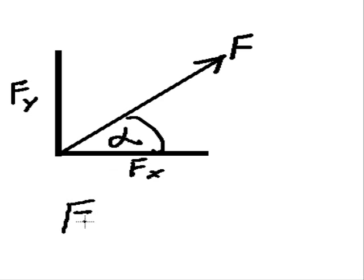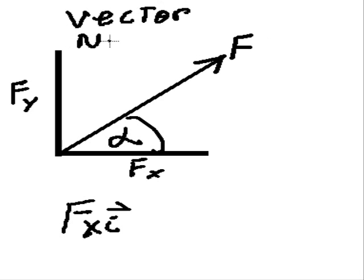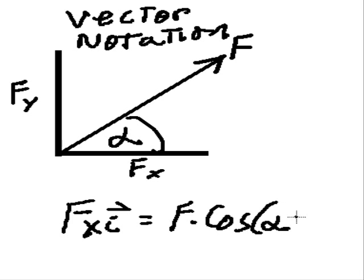So, you could say that Fx, vector Fx. We'll use the vector notation here. We're now using vector notation. And, we're saying Fx in the ith direction is equal to F times the cosine of alpha. And, that's equal to Fx in the ith direction. And, so you could actually represent this in this format.